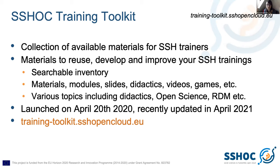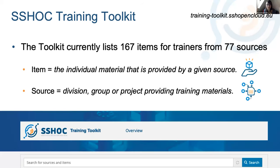It will be continuously updated at least until the end of this project. The toolkit currently consists of a bit more than 160 items — these are individual materials for trainers — from 77 different sources. Sources can be a division, a group, or a project that provides training materials, whereas items are the individual materials provided. You can search across all of these and find things valuable for your own training.